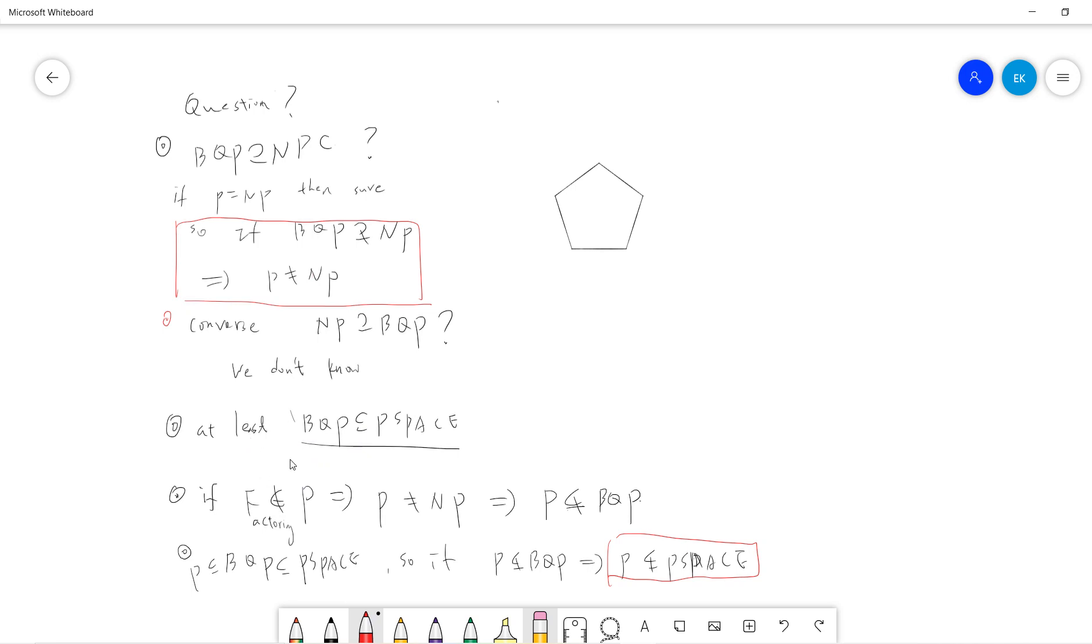If BQP cannot solve NP-complete, that will imply the famous P is not equal to NP. Because BQP always contains P. If NP do not all contain in BQP, then it will directly imply P is not equal to NP.